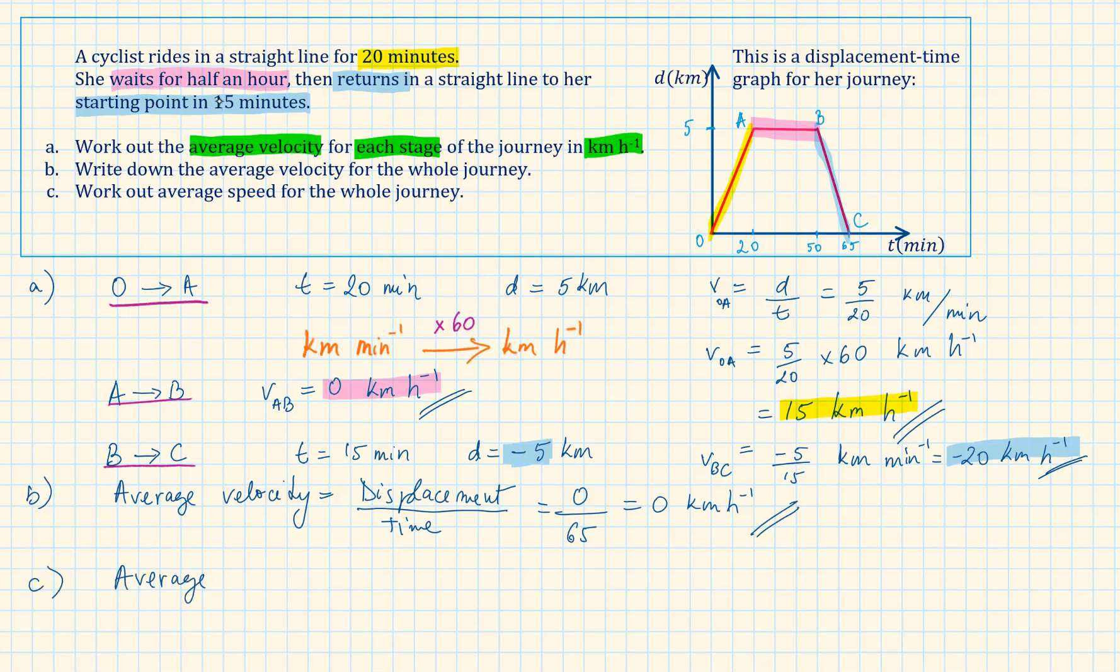And finally, part C, work out the average speed for the whole journey. The total distance travelled is 5 plus 0 plus 5 over 65 minutes. That is 10 over 65 km per minute. Transforming this into km per hour, we times it by 60, which is 9.2 km per hour to two significant figures.